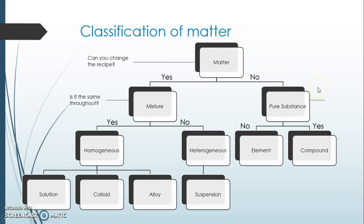A pure substance can be broken down into two types. Ask: is there more than one type of atom? If no, it's an element. If yes, it's a compound.